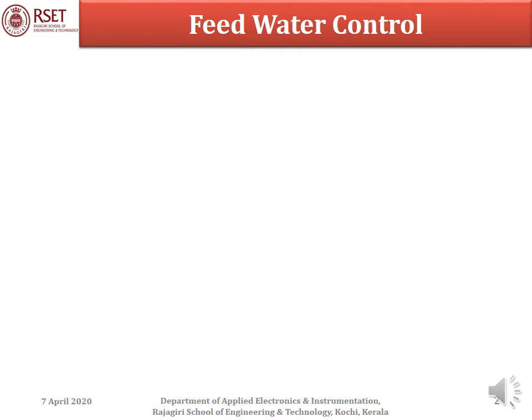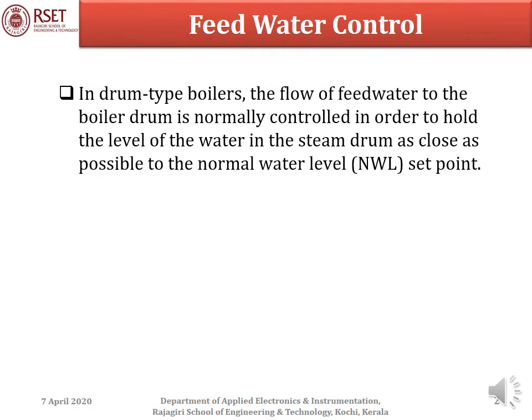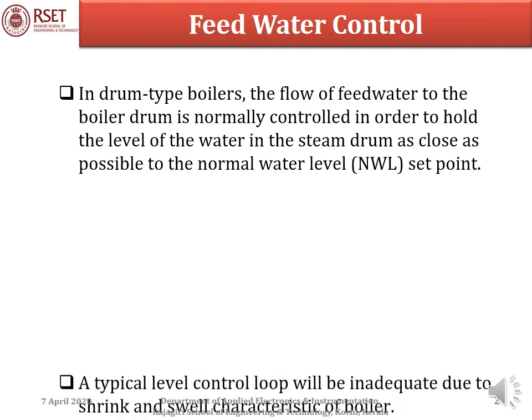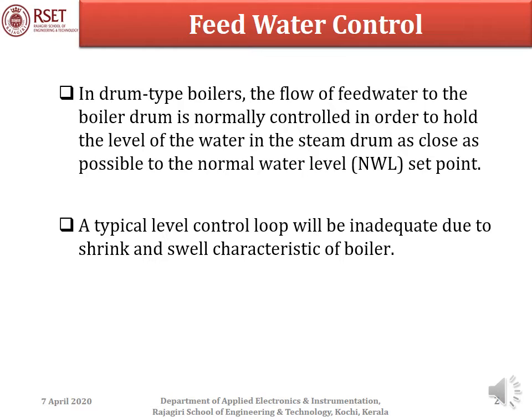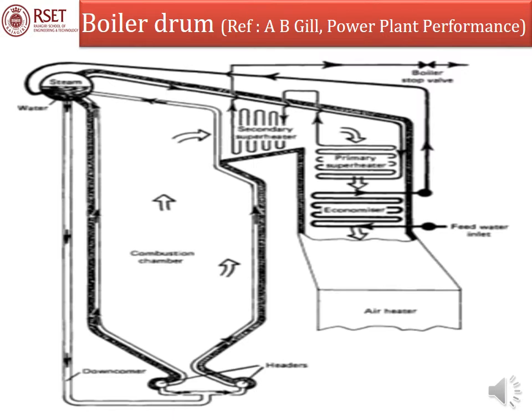Feed water control. In drum type boilers, the flow of feed water to the boiler drum is normally controlled in order to hold the level of water in the steam drum as close as possible to the normal water level set point. A typical level control loop will be inadequate due to the shrink and swell characteristics of boilers.